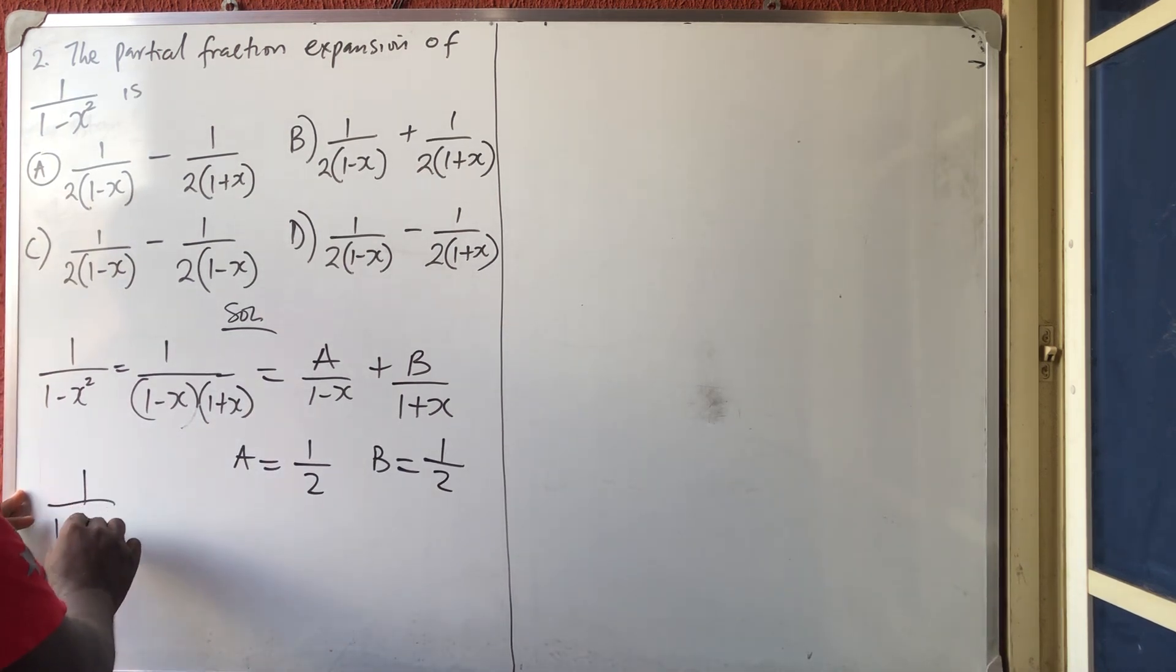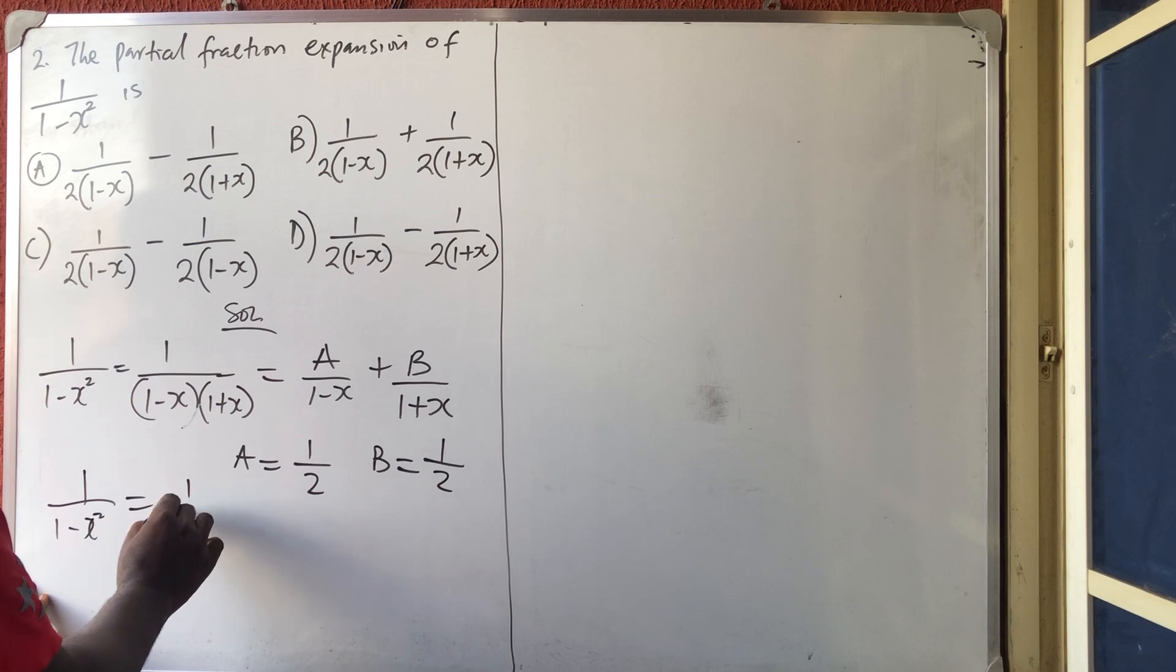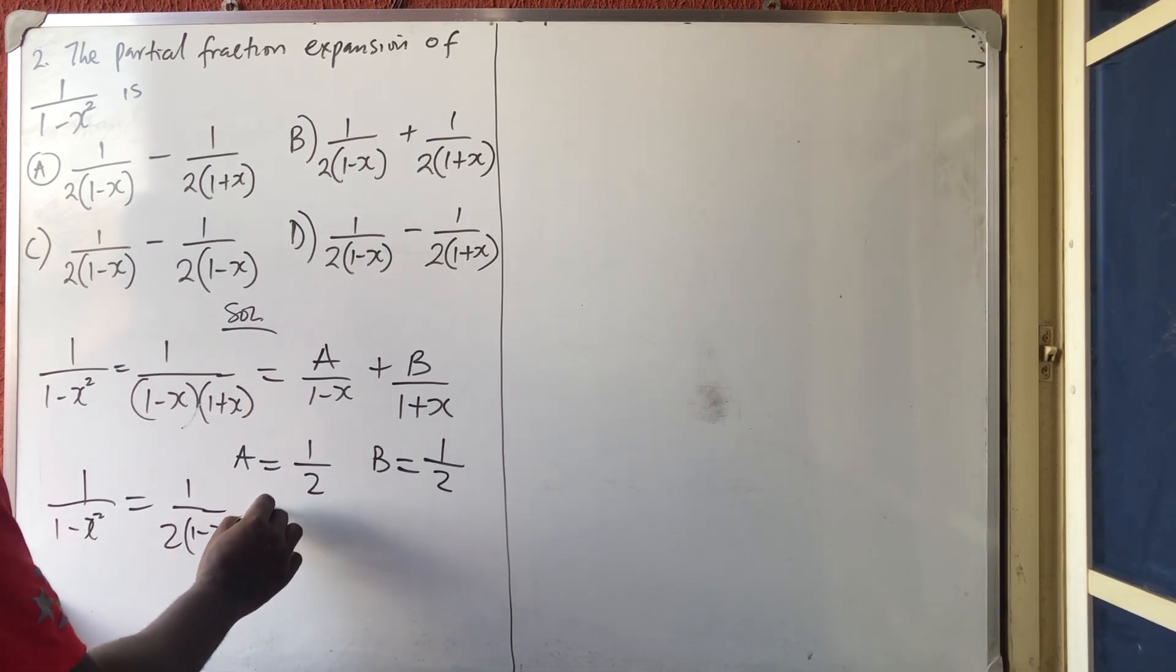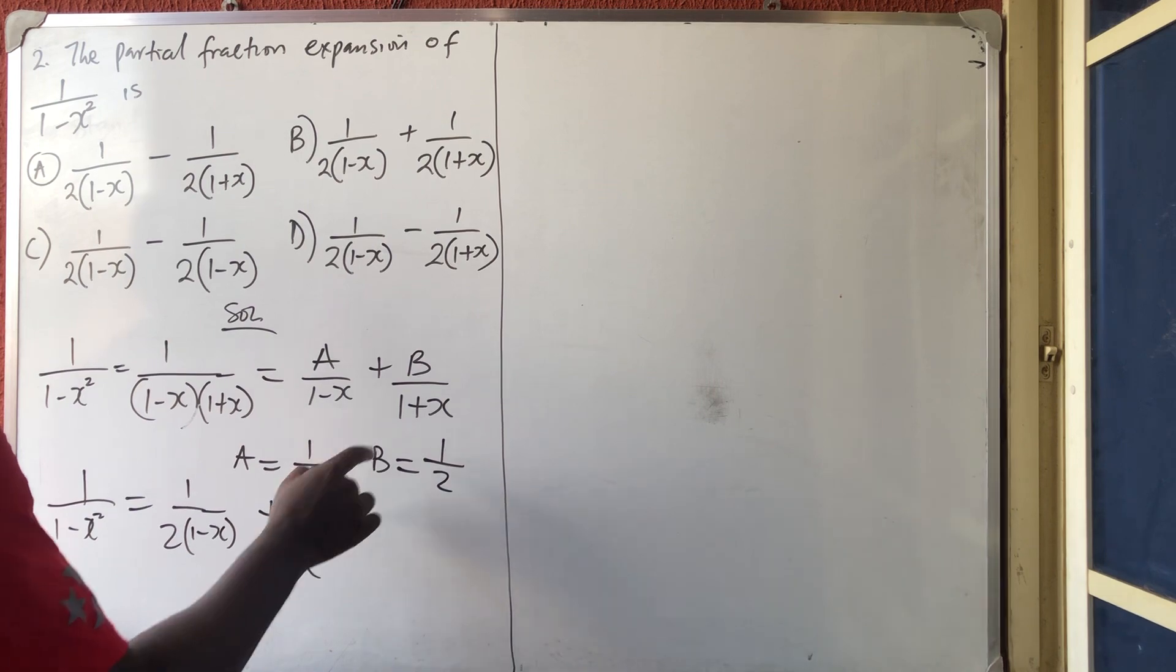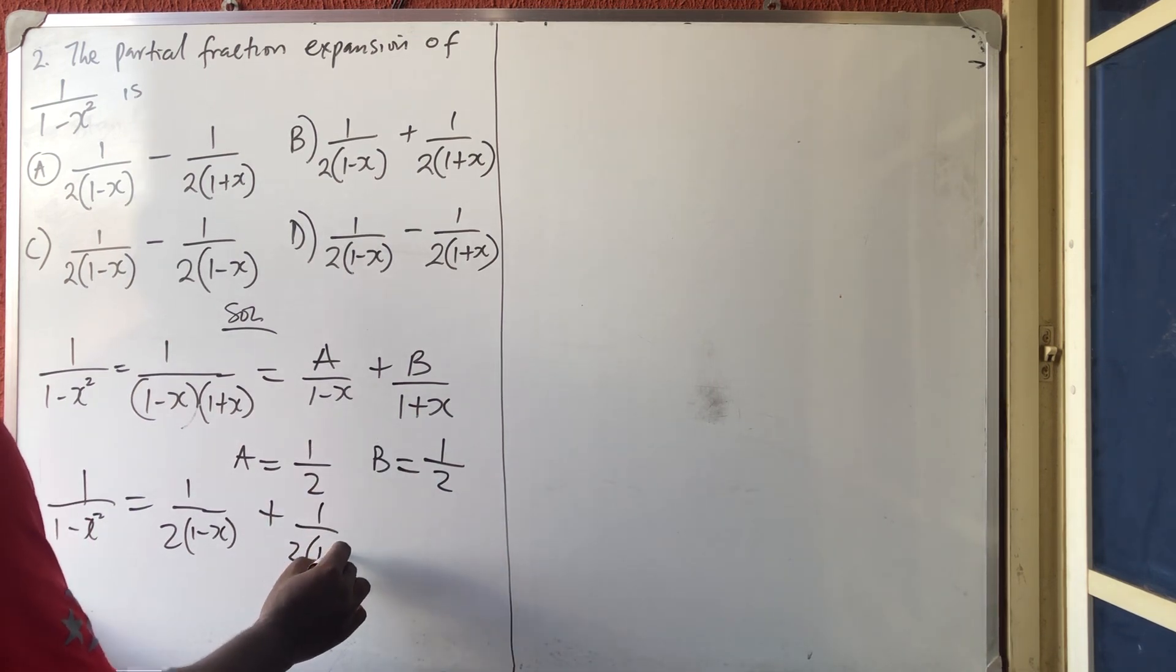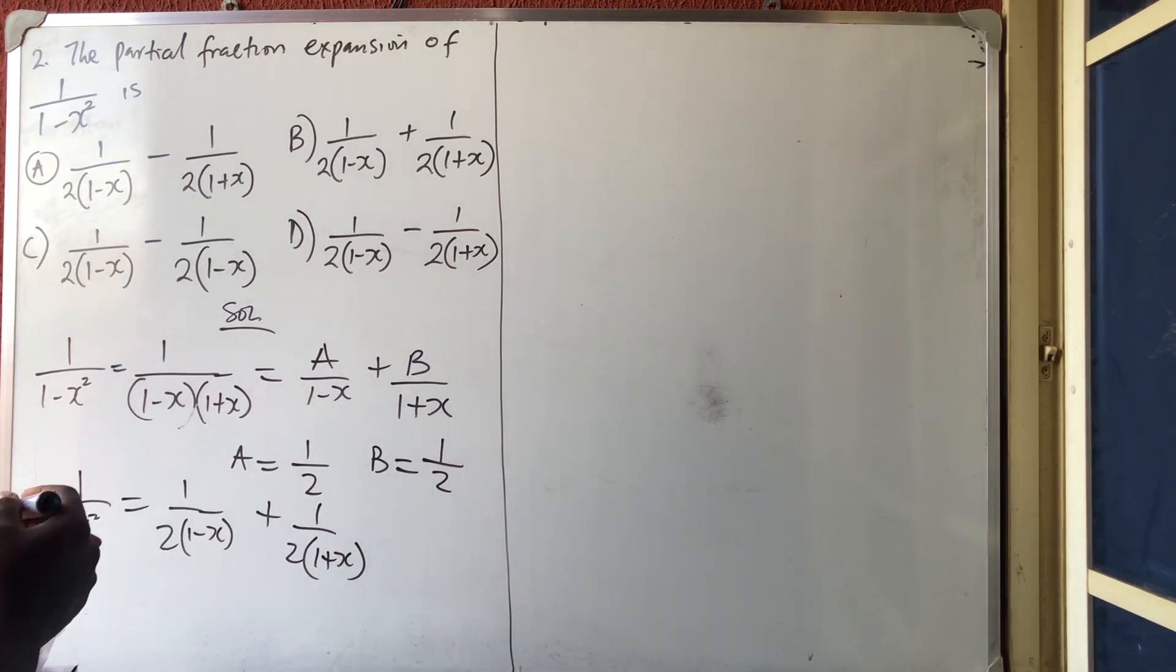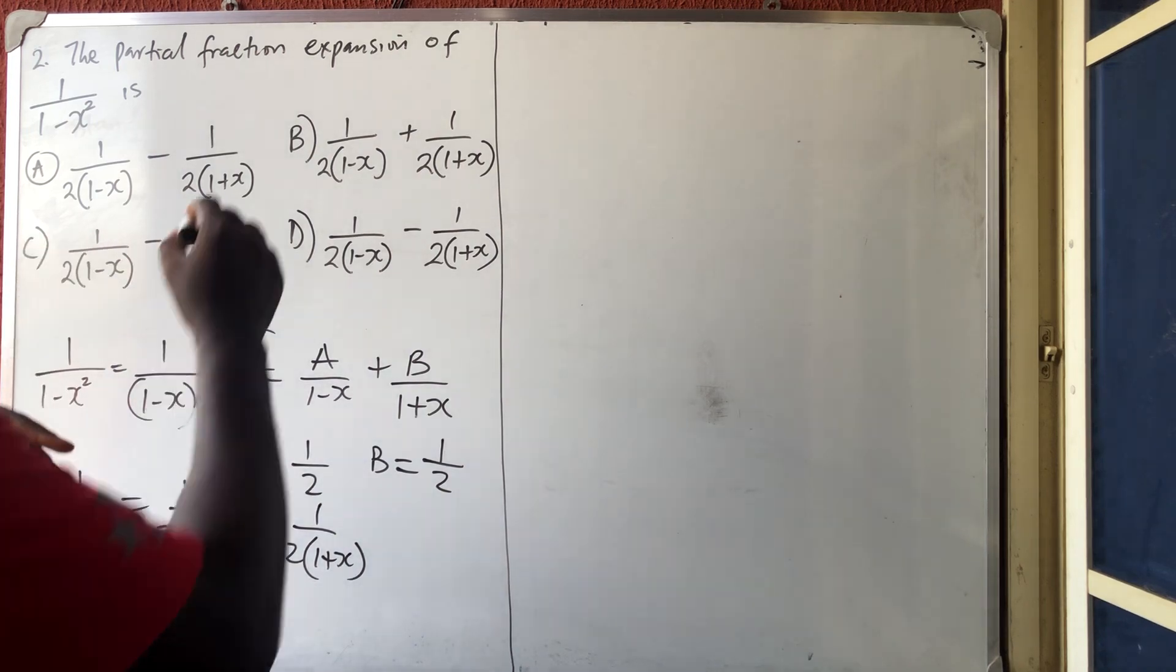So automatically, my 1 over 1 minus x squared is equal to 1 over 2 times 1 minus x, plus 1 over 2 times 1 plus x. As simple as that. So the answer is b.